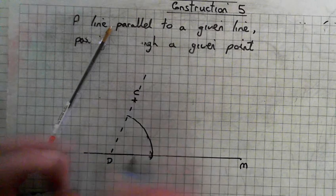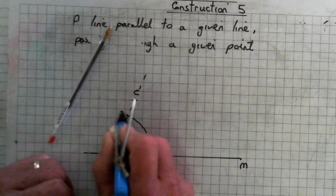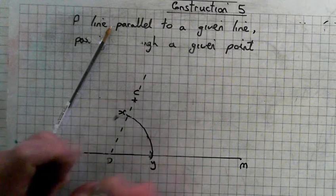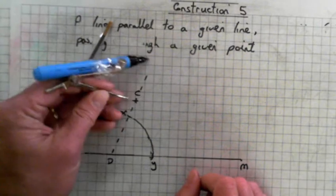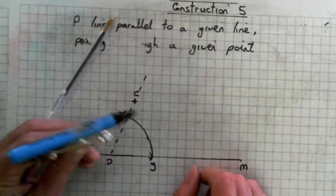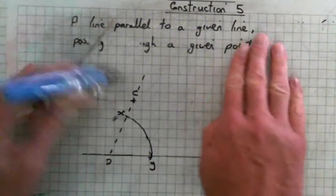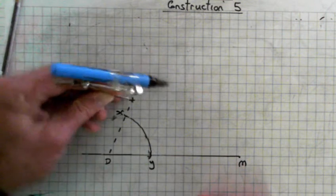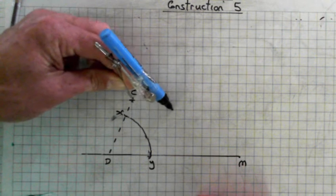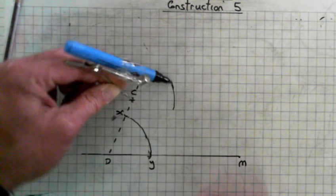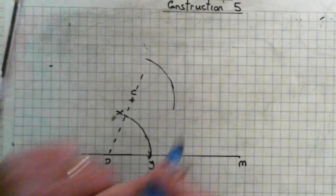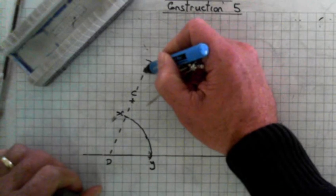Right, label the points of intersection. So we're going to call this point here X, we're going to call this Y. All right, now we need to go up to the point C and do roughly the same thing. Draw the same arc. Just rub that out for a second. Go up to the point C, which is here, and draw the same arc passing through this line.